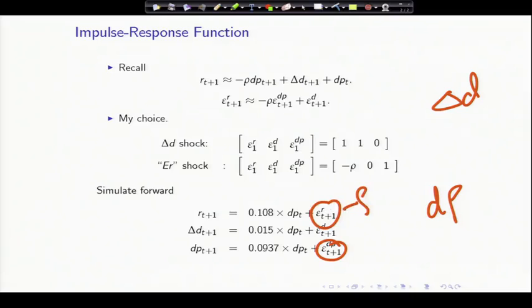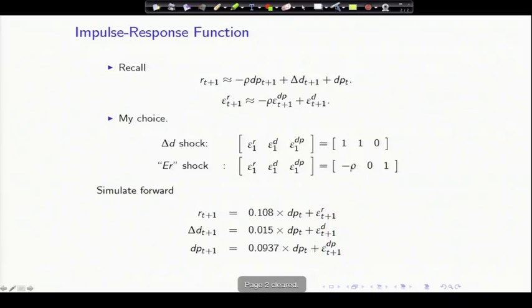So the dividend yield is going to go up. It's going to really hit the first period returns. But what happens after that? What happens in the second and third period?